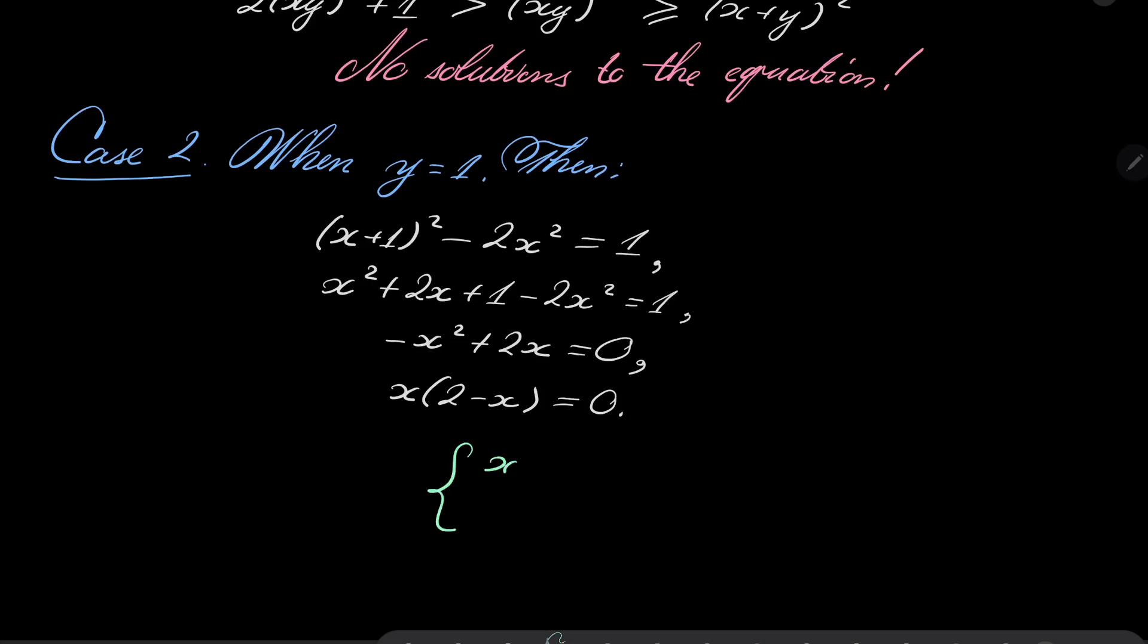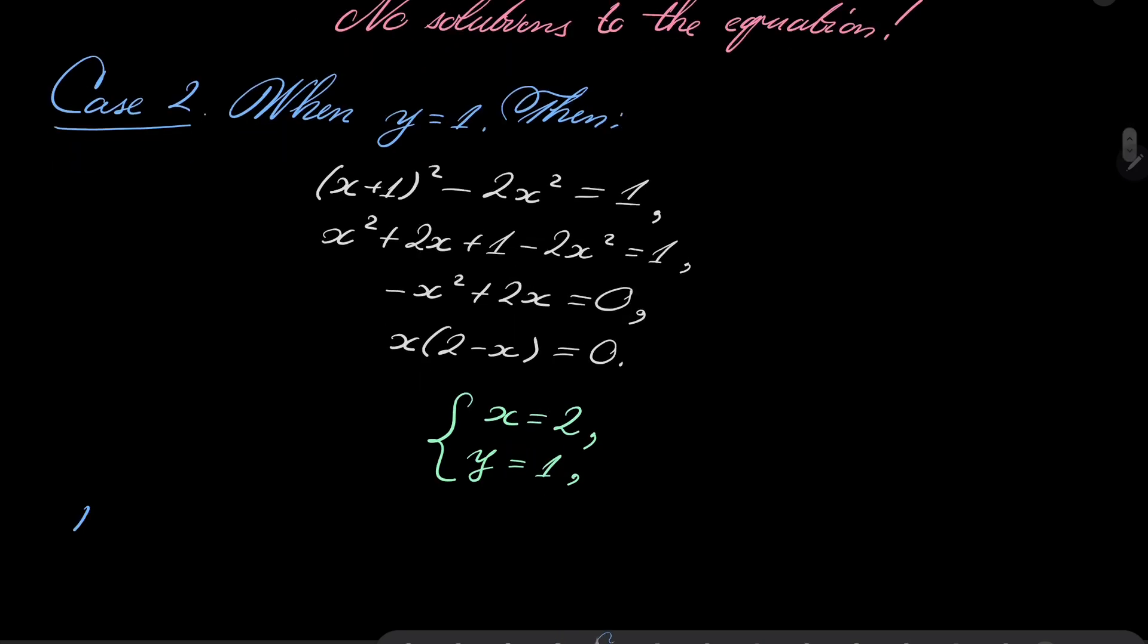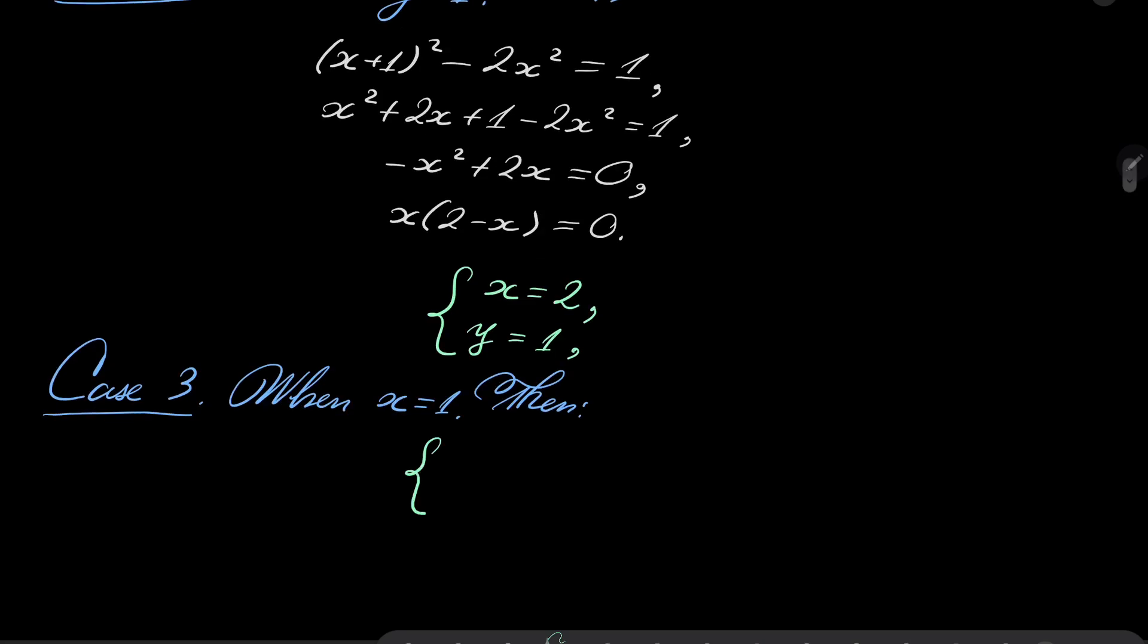So, in this case, x = 2, y = 1, and because of symmetry, Case 3: when x = 1, notice that then we have the symmetric pair of solutions, (1,2).